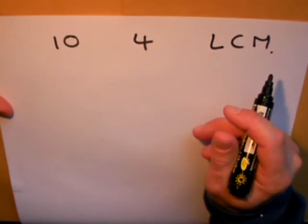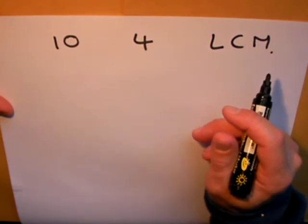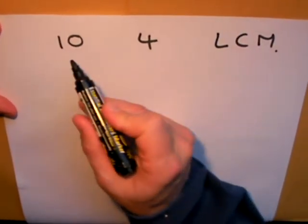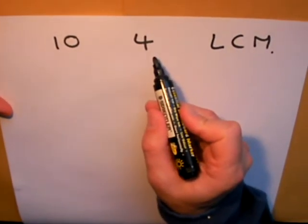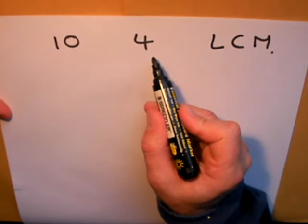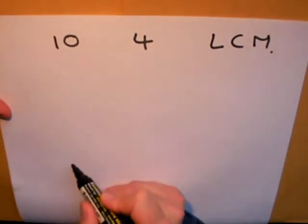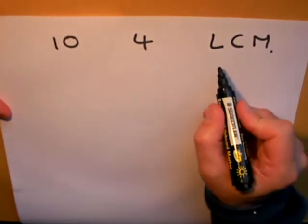You may have noticed last time with 5 and 7 that we found 35, and 5 times 7 is 35. So we could find a common multiple by multiplying 10 and 4 together to get 40, and 40 does appear in both times tables. But is it the lowest common multiple?